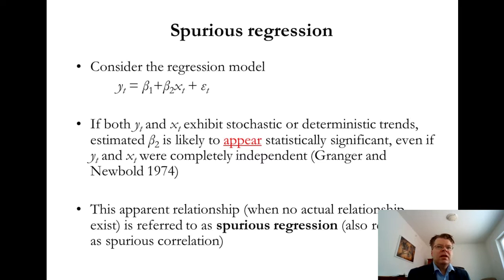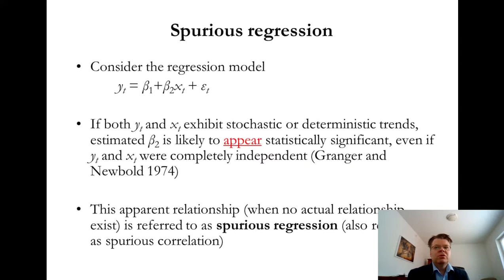Notice that you can take any two variables with some kind of growth trend, and this kind of static model would likely indicate a significant coefficient B2. This is well known in econometrics, but in my impression it's not so widely known in the research community more broadly. Sometimes I have noticed in popular media that researchers have found a statistically significant relationship between two completely unrelated variables and made big headlines about it — but to me, it looks very much like a spurious regression. This is something important to be aware of when using regression analysis.